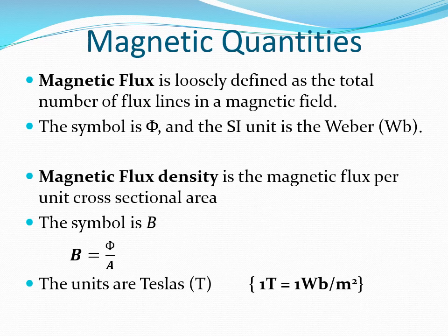Let's look at magnetic quantities. The first one is magnetic flux, which is loosely defined as the total number of flux lines in the magnetic field — we say loosely defined because magnetic flux lines are imaginary lines. The symbol for magnetic flux is phi and the SI unit is the Weber. The second quantity is magnetic flux density, defined as the magnetic flux per unit cross-sectional area, where the area is perpendicular to the direction of the flux lines. The symbol is B, the formula is B equals phi over A, and the units are teslas — one tesla is equivalent to one Weber per square meter.